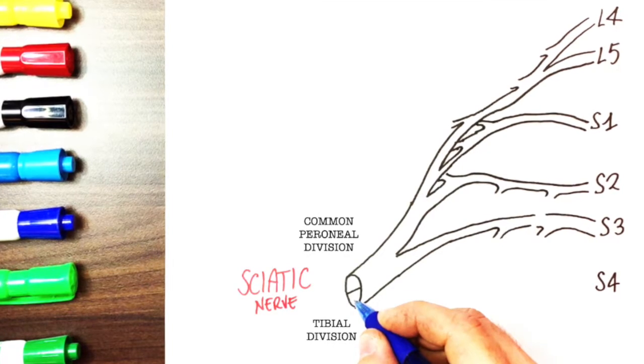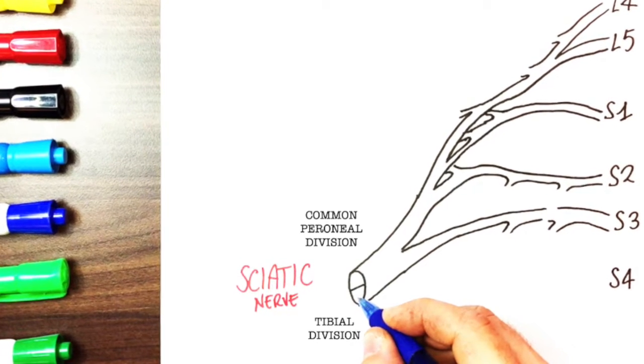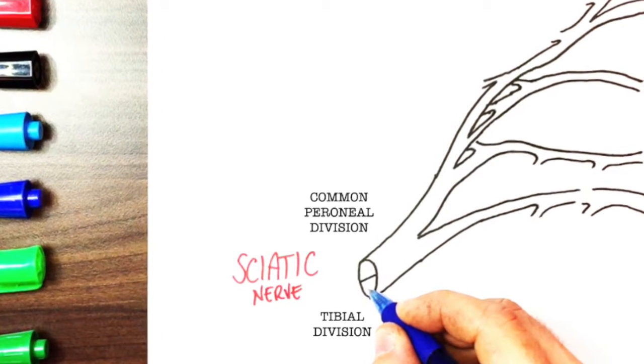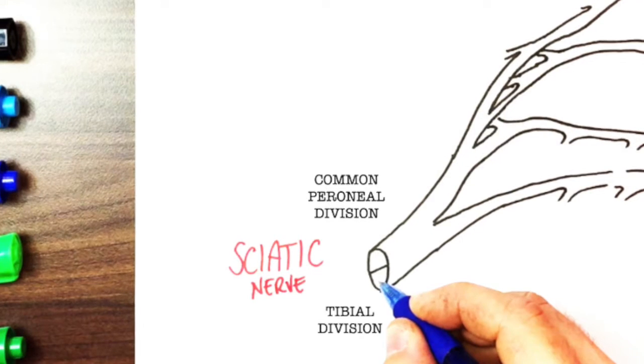The sciatic nerve arises from the anterior rami of L4, L5, S1, S2 and S3. It's formed by the common peroneal division and the tibial division which will split in the lower thigh.